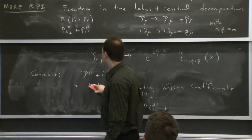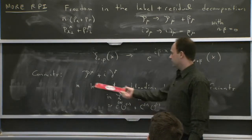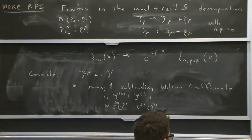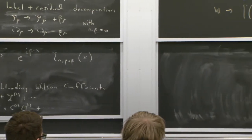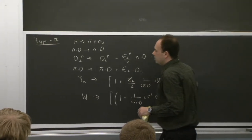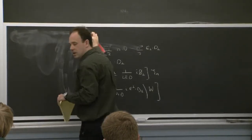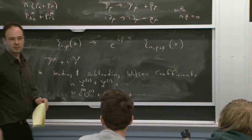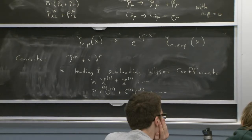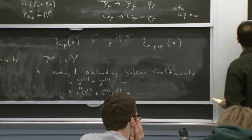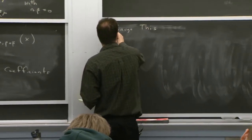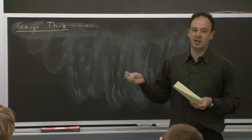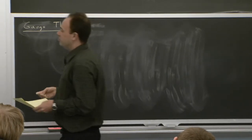This reparametrization symmetry connects label and residual momenta to each other — they were both part of the same thing originally, so there should be a connection in the effective theory. You can also think about combining gauge symmetry with reparametrization. Gauge symmetry tells us how to turn P mu into a covariant derivative. By combining these ideas carefully, we'll find very simple building blocks from which all SCET operators can be built.